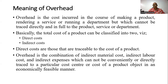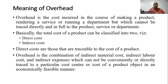Basically, when it comes to manufacturing a product, all those costs will be classified into two. The first one is direct cost and the second one is indirect cost. Direct costs are those that are traceable directly to the cost of a particular product, whereas indirect costs are those that you cannot trace to a particular product. So overheads by definition is a combination of indirect material costs, indirect labor costs, and indirect expenses, which cannot be conveniently or directly traced to a particular cost center or cost of a product in an economically feasible manner.